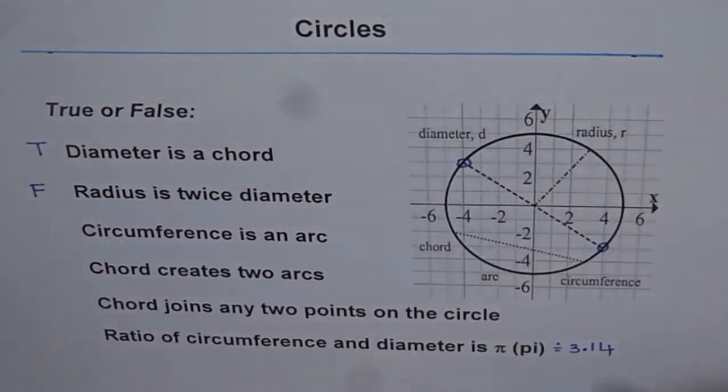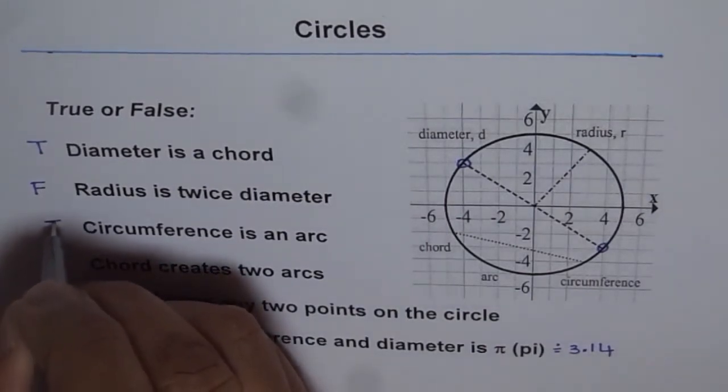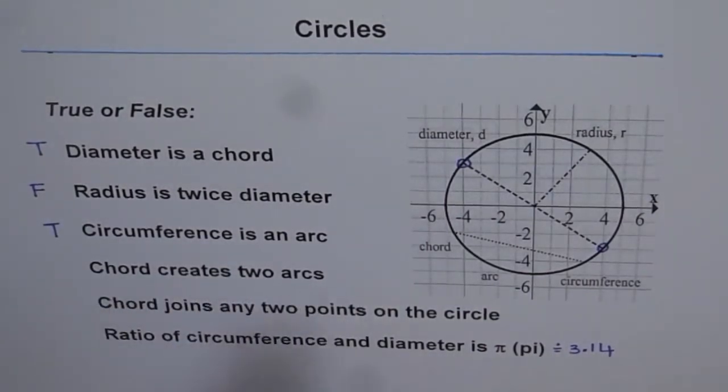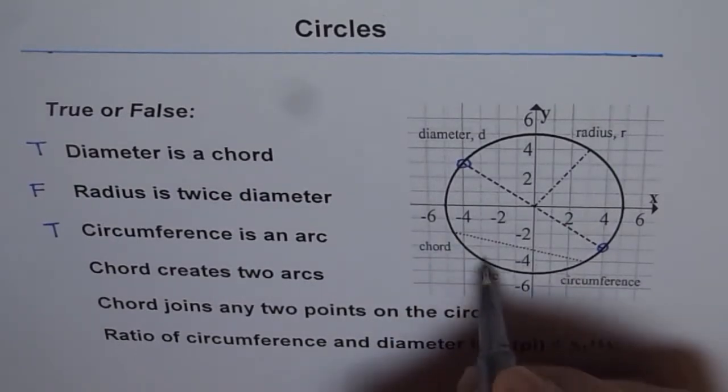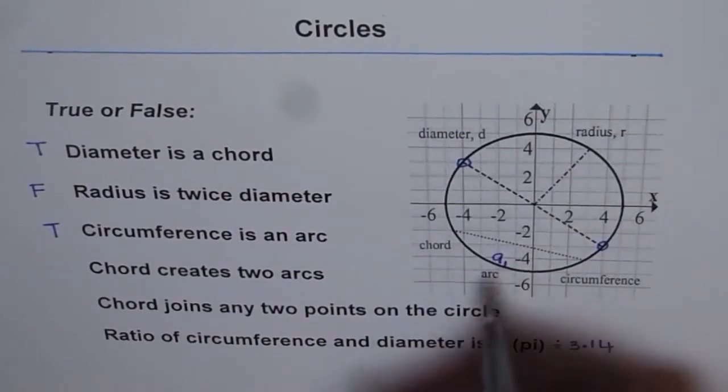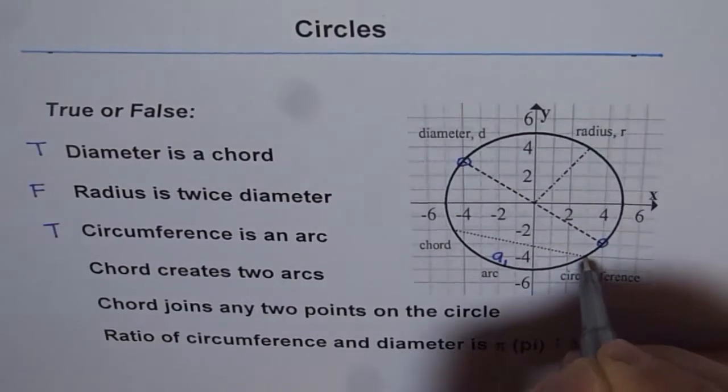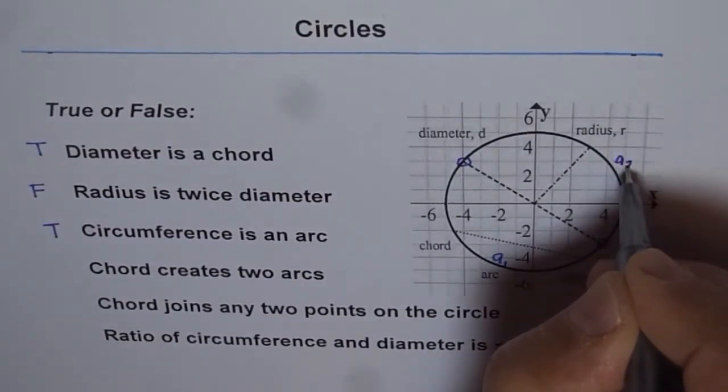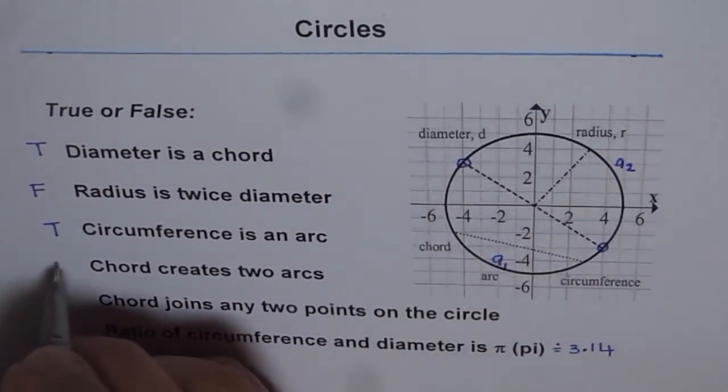Chord creates two arcs. So if I have this chord, then you have one arc on this side, so that is your one arc. Let me call this as a1, and the other one is that big one. Let me call that as a2. So a chord will always create two arcs. So that is true.